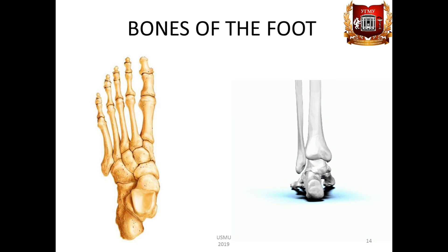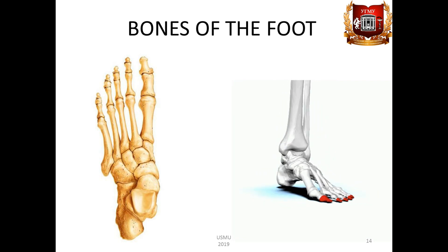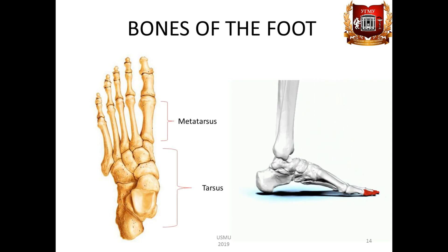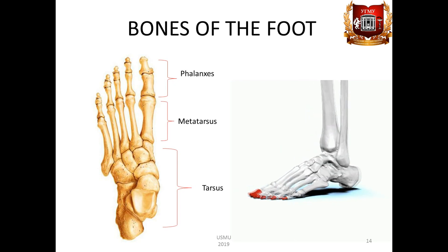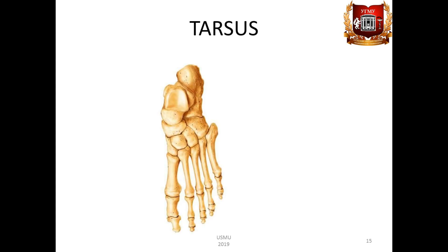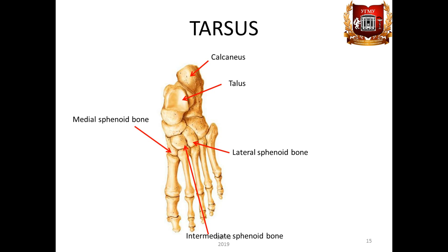The bones of the foot, ossa pedis, are divided into three departments: tarsus, metatarsus, and phalanges of the fingers. The skeleton of the tarsus includes seven bones. Two rows are distinguished in it: the proximal row and the distal row. The proximal row consists of the talus and calcaneus bones. The distal section consists of three cuneiform bones and a cuboid bone. Between these rows is a navicular bone.